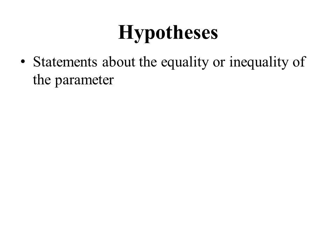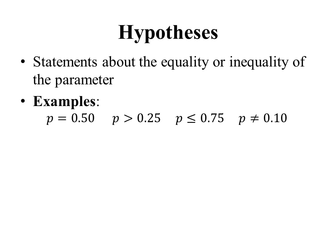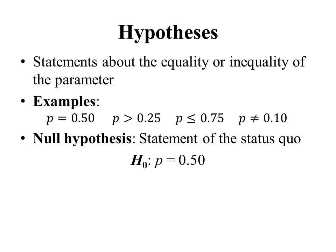The hypotheses are statements about the equality or inequality of the parameter. We're going to have two hypotheses: the null and the alternative. Examples of such statements include: the parameter equals some number (e.g., p equals 0.5), the parameter is greater than some number, the parameter is less than or equal to some number, or the parameter is not equal to some number. The null hypothesis is a statement of the status quo — something we might expect to be true if we didn't have any data to suggest otherwise.